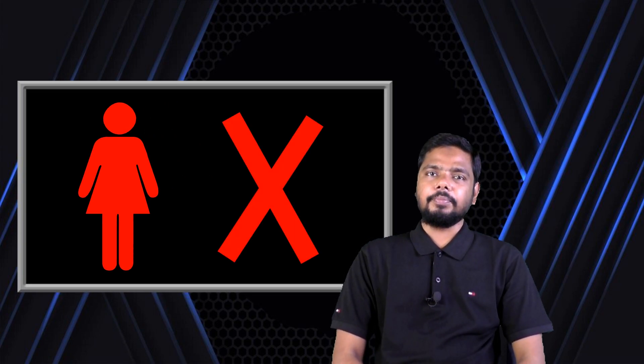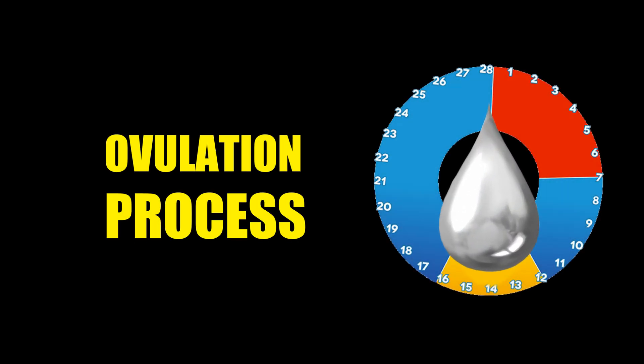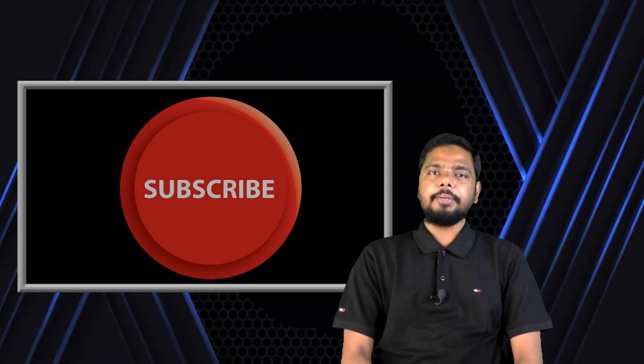Ovulation is the release of an egg from the ovaries. After release, the egg moves to the fallopian tube and stays for 24 hours. Pregnancy happens if sperm travel to the fallopian tube and fertilizes the egg during this time. If the sperm does not fertilize the egg, the egg moves to the uterus and breaks down, then leaves the body during the next menstrual period.